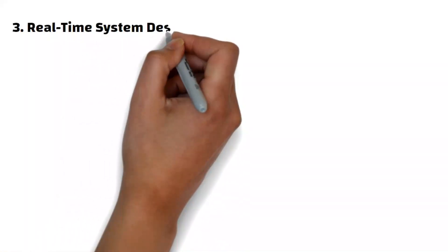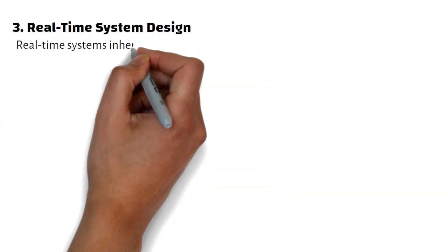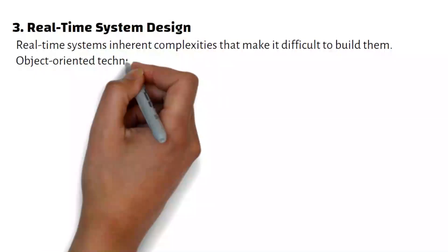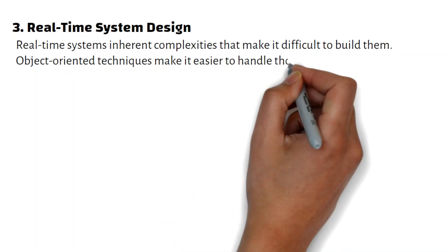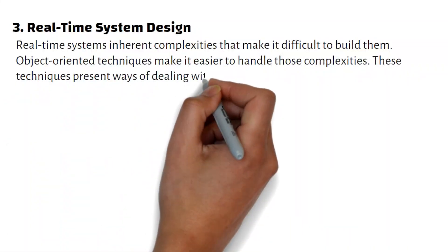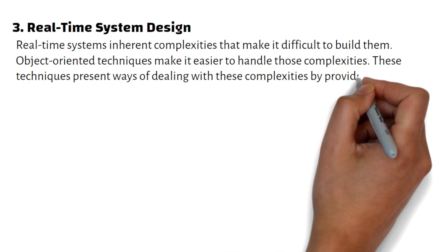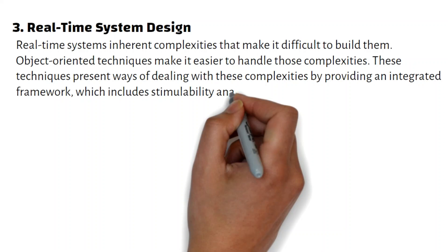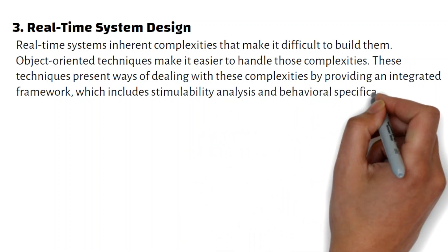Real-time System Design: Real-time systems have inherent complexities that make them difficult to build. Object-Oriented Techniques make it easier to handle those complexities. These techniques present ways of dealing with complexities by providing an integrated framework, which includes schedulability analysis and behavioral specifications.